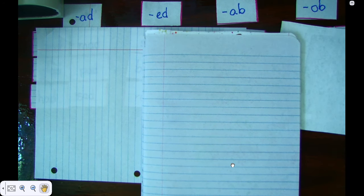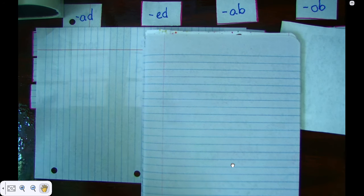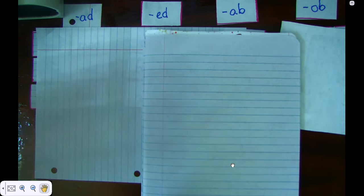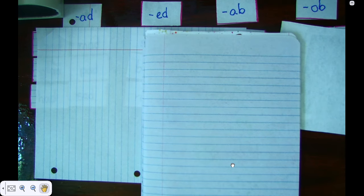We are going to do today, day seven, our blind sort. So the first thing I need you to do is lay out your headers and sort your words. Now that you've sorted your words, I need you to cover them up just like I covered mine up so you can't see them. When you're done covering them up, please start your video again.